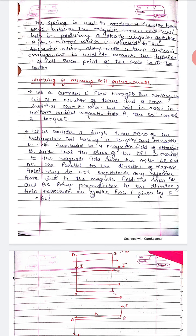Now, working of the moving coil galvanometer: let a current i flow through the rectangular coil of n number of turns, with cross-sectional area a, when the coil is placed in a uniform radial magnetic field b. The coil experiences a torque and is about to rotate.